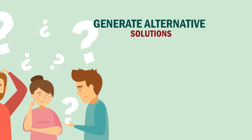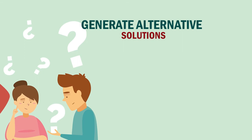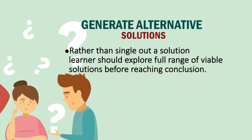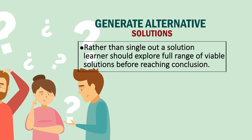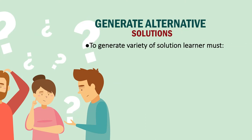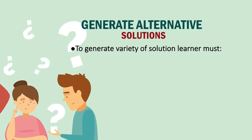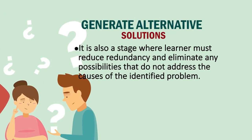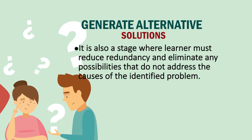Then comes the step of generating alternative solutions. When generating alternative solutions, you do not find a single solution — you try to find out what the possible and viable solutions are before reaching a conclusion. Learners explore the full range of viable solutions and generate as many potential solutions as possible. They then relate each solution to the cause of the problem, and if two solutions are working in the same direction or are similarly aligned, they merge or relate them. This stage is where the learner must reduce redundancy and eliminate any possibilities that do not address the cause of the identified problem.